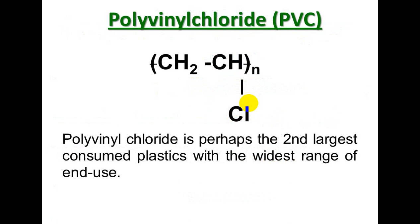PVC — vinyl chloride makes polyvinyl chloride. In vinyl chloride, there is a double bond between CH₂ and CH. One of the double bonds, the pi bond, breaks down, freeing the molecule to connect with other vinyl chloride molecules and make polyvinyl chloride. PVC is perhaps the second largest consumed plastic, with the widest range of properties.